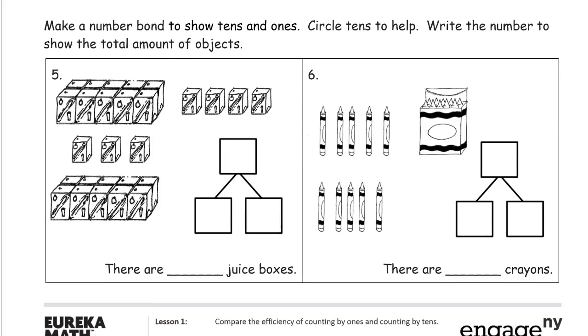Make a number bond to show tens and ones. Circle the tens to help and write the number to show the total amount of objects. So here we have ten, ten, and then the ones we have one, two, three, four, five, six, seven of those.